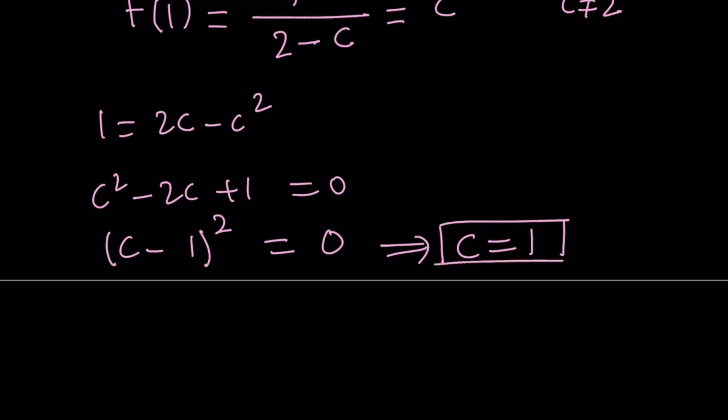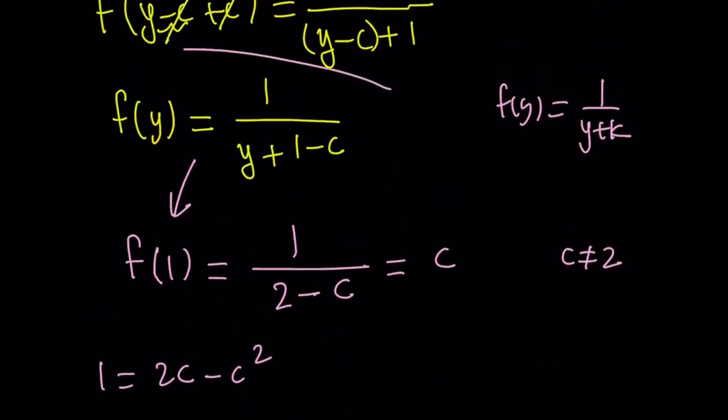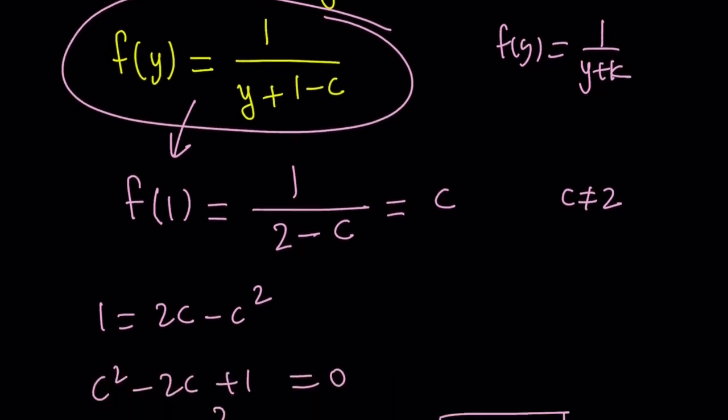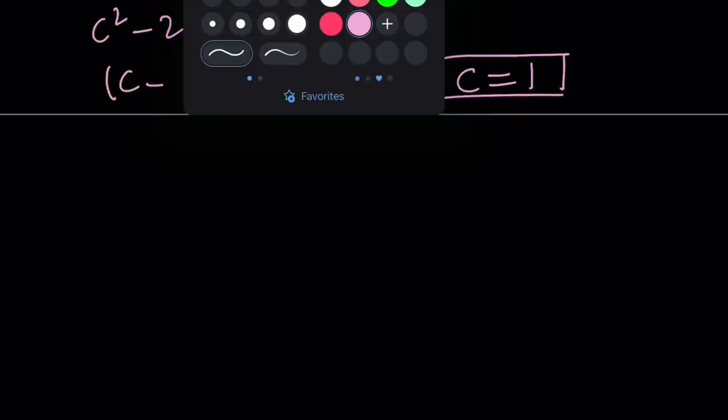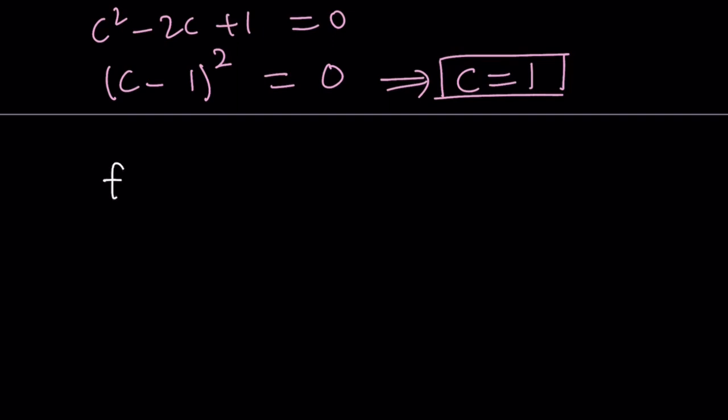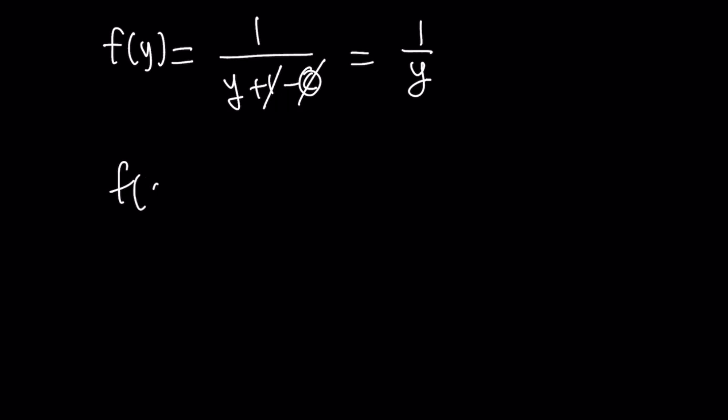How does that help? Remember, we're looking for f(x), or an expression for f. We know that f(y) can be written as 1/(y + 1 - c), and we know that c = 1 now. Let's go ahead and plug it in. We have f(y) = 1/(y + 1 - c). Replace c with 1, these two cancel out, and you end up with 1/y. This means f(y) = 1/y, which means we can write f(x) = 1/x. That is actually the answer to the problem. We found the function f.